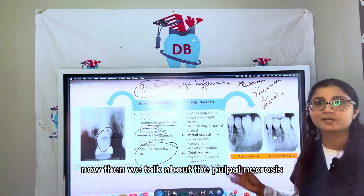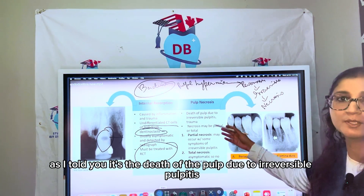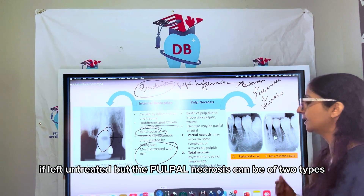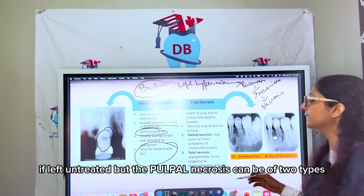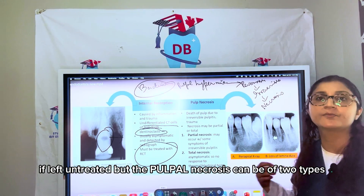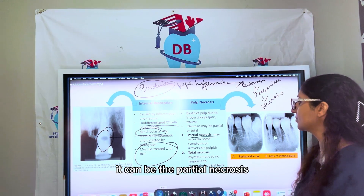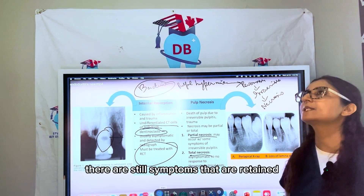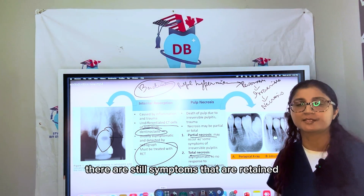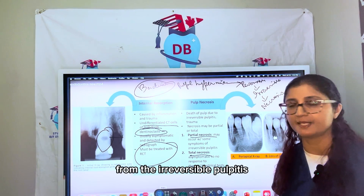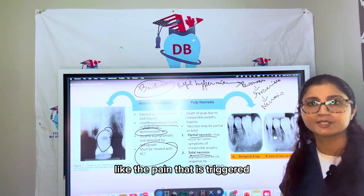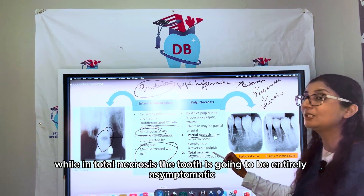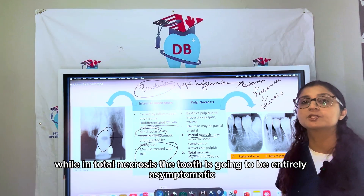Pulpal necrosis is the death of the pulp due to irreversible pulpitis left untreated. It can be of two types: partial necrosis or total necrosis. In partial necrosis, symptoms from irreversible pulpitis are still retained, such as pain triggered by hot liquids and relieved by cold. In total necrosis, the tooth is entirely asymptomatic and gives no response to thermal or electrical testing.